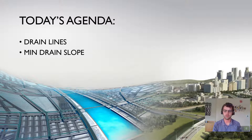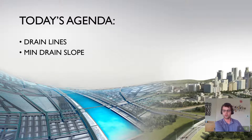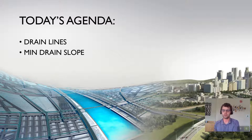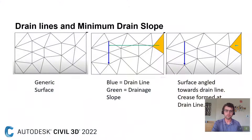Today's agenda covers two things: creating drain lines in Civil 3D and understanding how that ties into the minimum drain slope that you set in your zones.